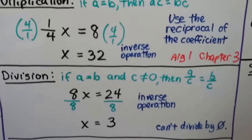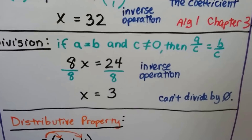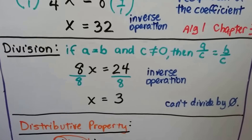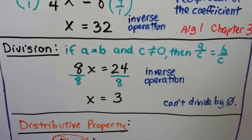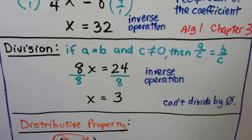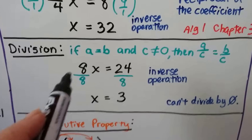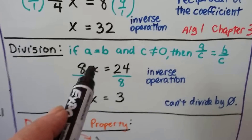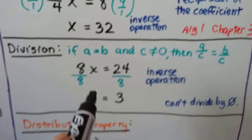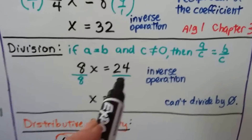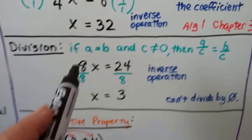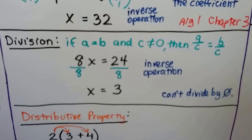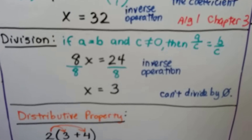For division, if A equals B and C doesn't equal 0, then A divided by C equals B divided by C. If we've got 8X equals 24, we divide both sides by 8 as the inverse operation, and we get X equals 3. Remember, you can't divide by 0.